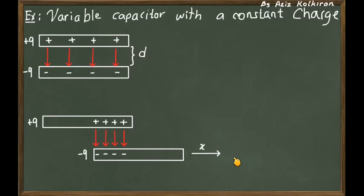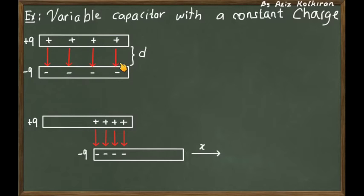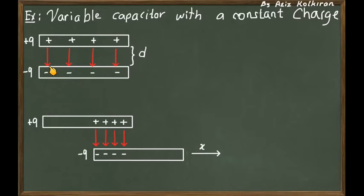The lower plate is moved in the positive X direction, a little bit distance X. What happens to the capacitance? Well, initially we have this uniform electric field between the plates. And if you slowly slide the lower plate to the right, these pair charges — plus and minus charges — want to keep their interactions the same.